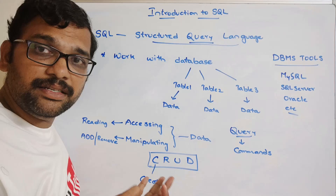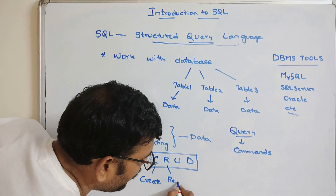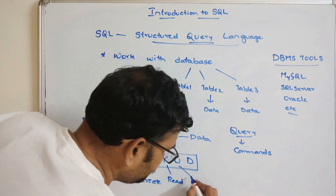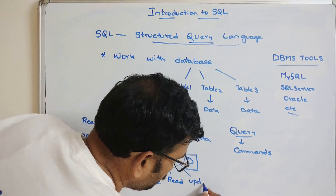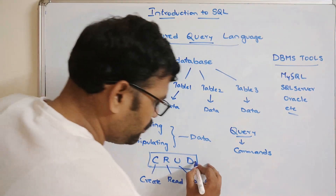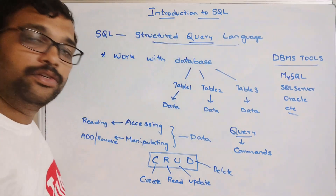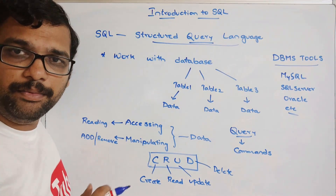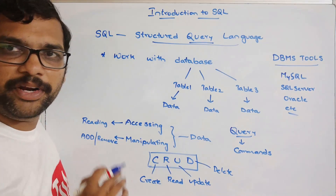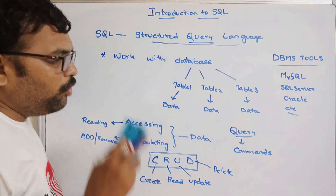CRUD stands for Create, Read, Update, and Delete. Create means creating the database and tables. Read means accessing the data. Update means modifying existing data. Delete means removing data from the table. These four together are called CRUD operations.